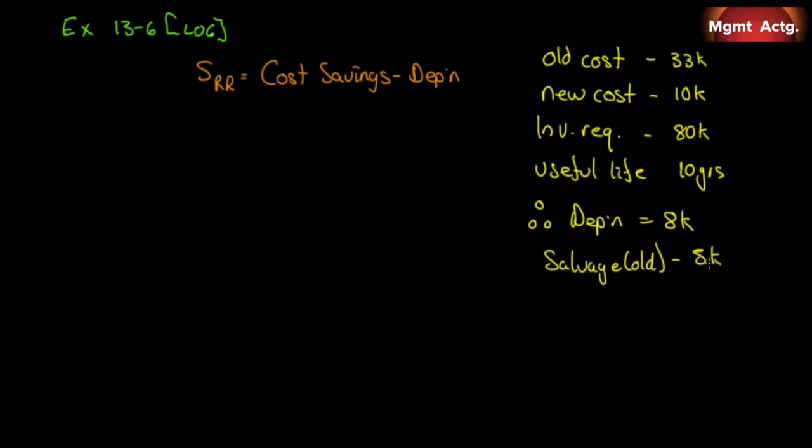We want to calculate the simple rate of return. Our simple rate of return, you recall, is our cost savings minus our depreciation divided by our initial investment. So all we have to do is fill in numbers. Cost savings: it was $33,000, it's now going to be $10,000, so our savings are $33,000 minus $10,000. That's what we'll save, but that's on a cash flow basis.